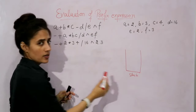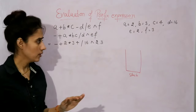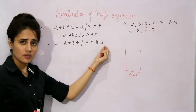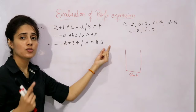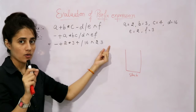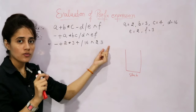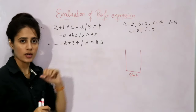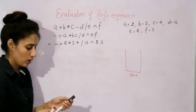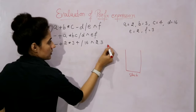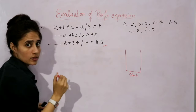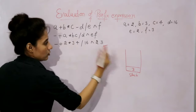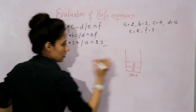Now let's see how to evaluate this prefix expression using a stack. Create a stack. The first step is to start scanning the prefix expression from right to left. If you find an operand, simply push it onto the stack. So scanning from right to left: first we have three — this is an operand, simply push it into the stack. Again, two — this is also an operand, simply push it into the stack.